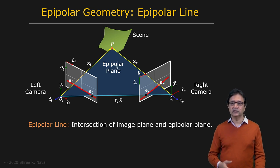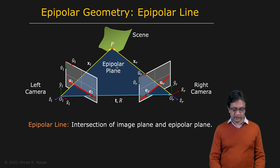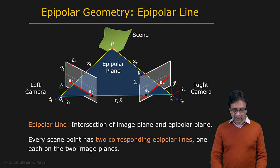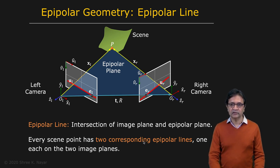The epipolar plane intersects with your two image planes to produce these two lines here, red lines. And these two red lines are referred to as the epipolar lines in the left and right images. So every scene point has two corresponding epipolar lines, one in each of the two images.